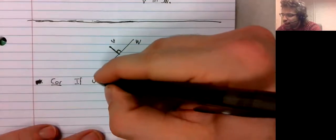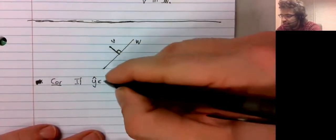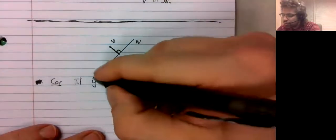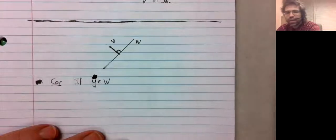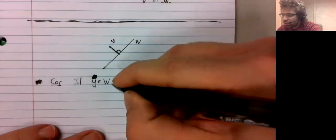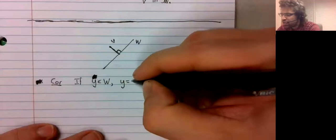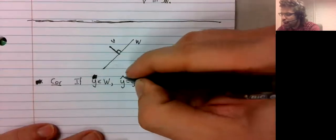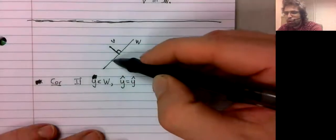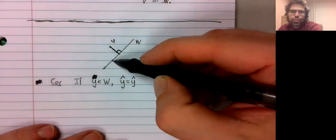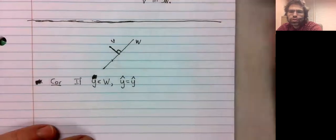If Y belongs to W, then Y equals Y hat. That is to say, if you're already in W, you are your own orthogonal projection.